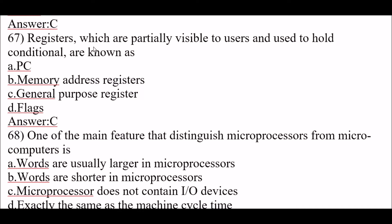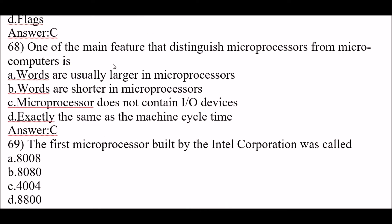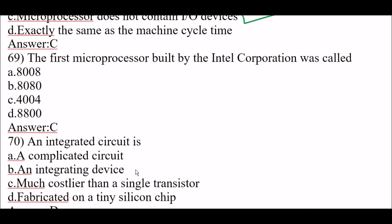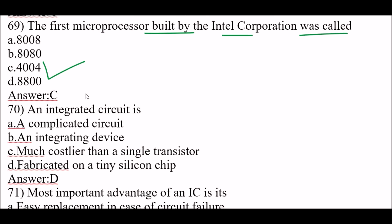Next question: registers which are partially visible to users and used to hold conditions are known as general purpose registers — option C. Next question: one of the main features that distinguishes microprocessors from microcomputers is option C — a microprocessor does not contain input-output devices. Next question: the first microprocessor built by Intel Corporation was called 4004 — option C.